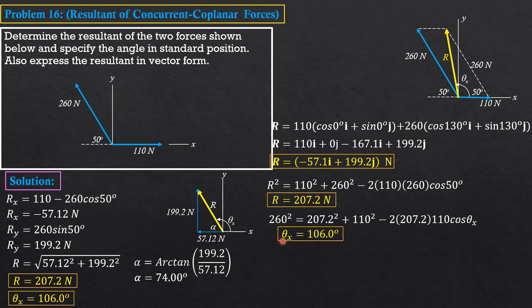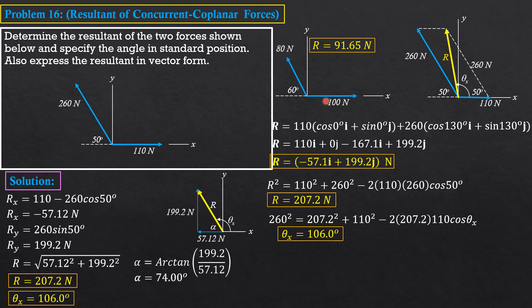That's it for the three solutions. For your practice, try to solve the next problem — almost the same setup but different results. Show that the magnitude of the resultant is 91.65 Newtons, theta_x is 49.11°, and in vector form R = 60.00i + 69.28j Newtons.